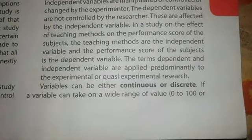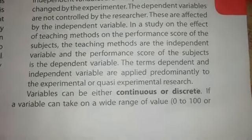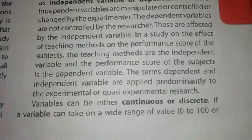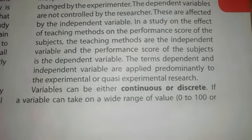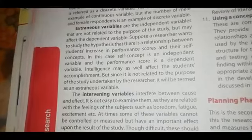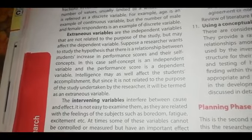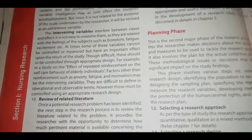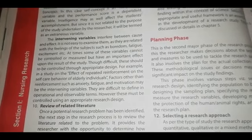The next type of variables is continuous and discrete. Continuous variables can be measured on a range, such as age. Discrete variables are counted in fixed numbers, such as number of students in a classroom. There are also extraneous variables and intervening variables. The extraneous variable can influence the study and affect the dependent variable. The intervening variable can interfere with the cause and effect relationship, and it is not easy to examine.